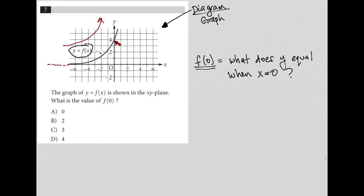So f of 0, so x equals 0 here, right? x equals 0 on the y axis. And then the graph crosses the y axis at 4. So that means f of 0 must be equal to 4, right? y equals 4 when x equals zero. So our answer here is choice D.